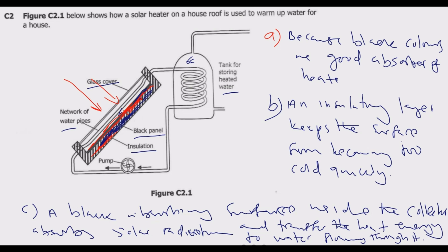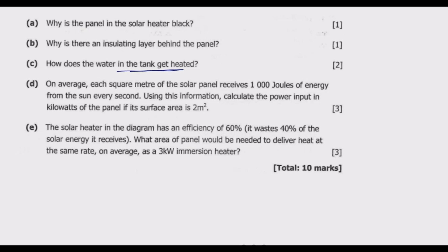As water is pumped through, the collectors convert solar radiation into heat energy which heats the water passing through. Once heated, the water is stored in the storage tank. Heated water is lighter so it rises, while cooler, heavier water comes down to be pumped through again — and this cycle continues.